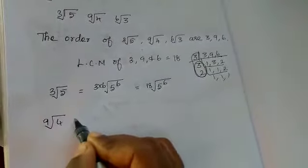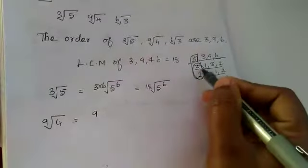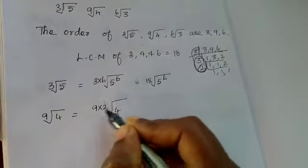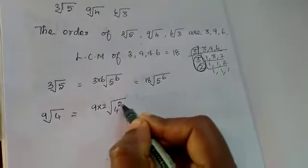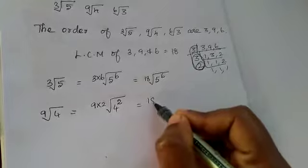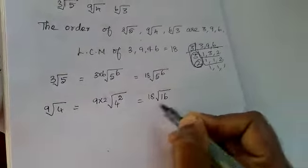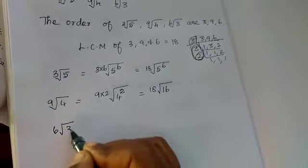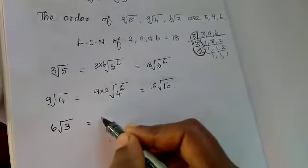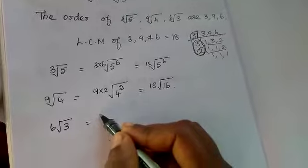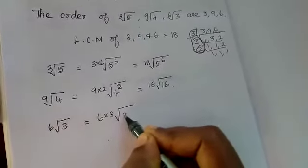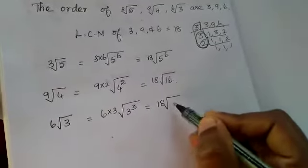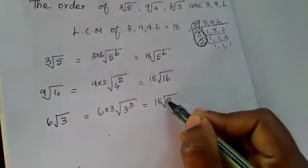9 root of 4. Now which number here you want to multiply? 9, what's number? 2. 9, 2's are 18. The same number here you want to put, 18 root of 16. Next one, 6 root of 3. Here which number you want to multiply? 3. 3 cube. Now 18 root of 27.